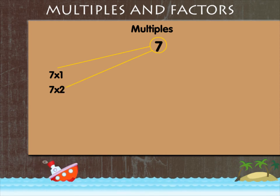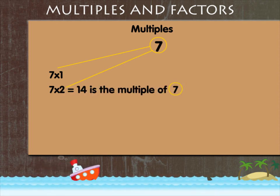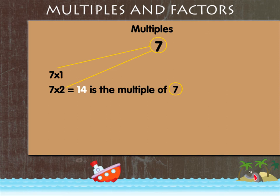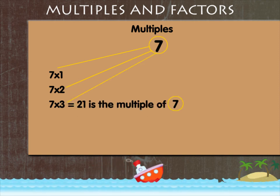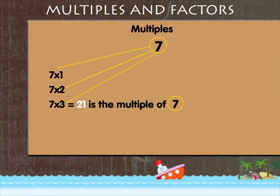7 into 2 is 14. So 14 is a multiple of 7. 7 into 3 is 21. And 21 is also a multiple of 7.